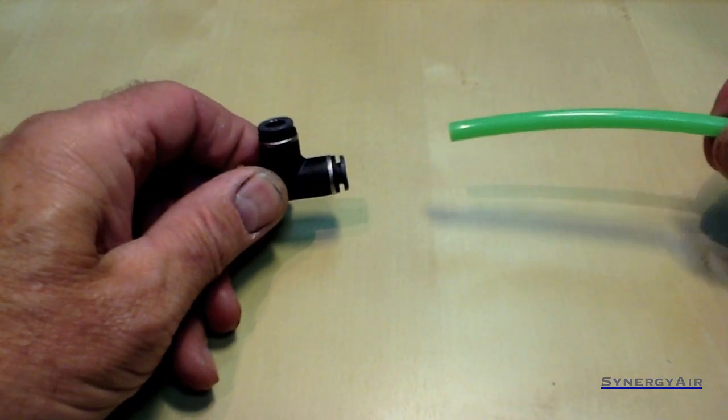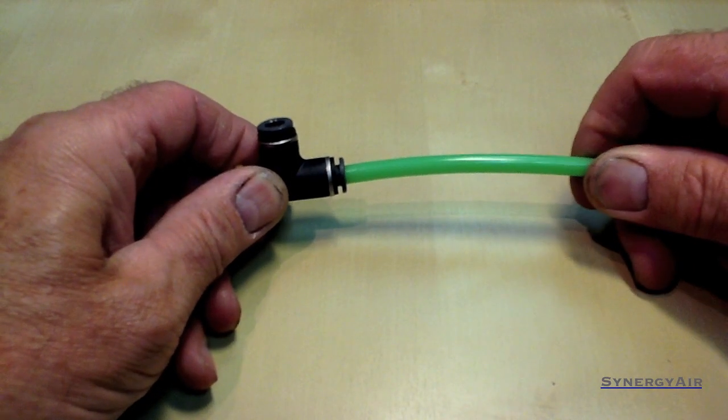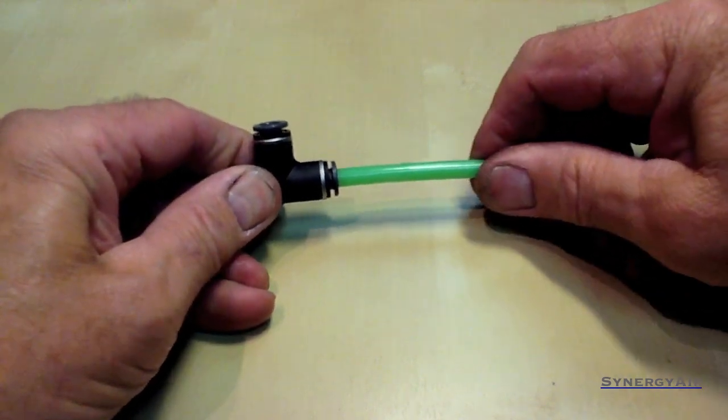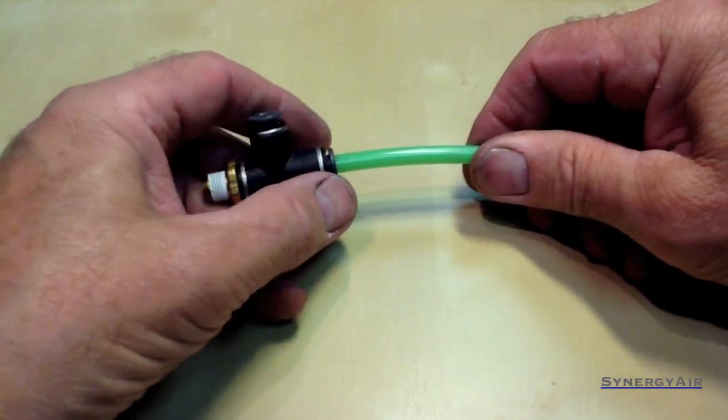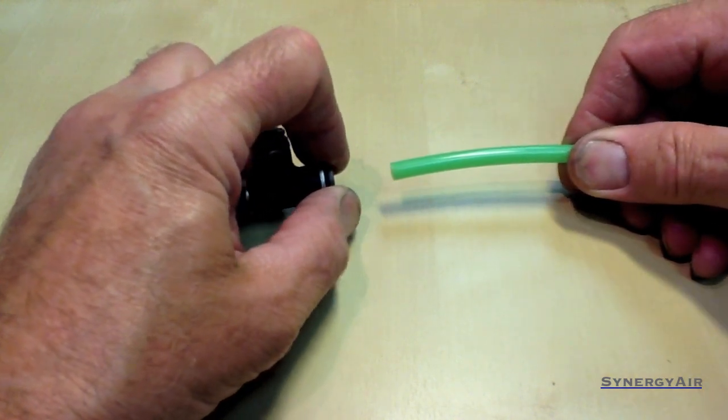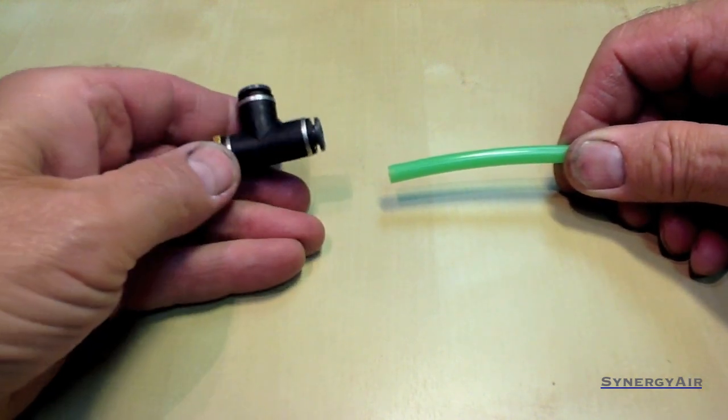This is how simple the tubing goes in. A flush cut on the end of the tubing. One good strong push. You can feel it click in. Give it a slight tug. To release it, all you have to do is pull the collar back. Slip the tubing right on back out. And you can refit it.